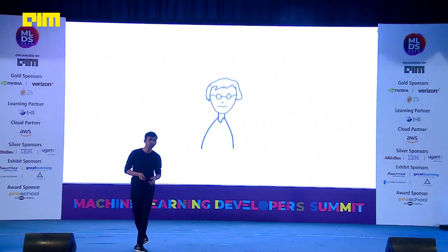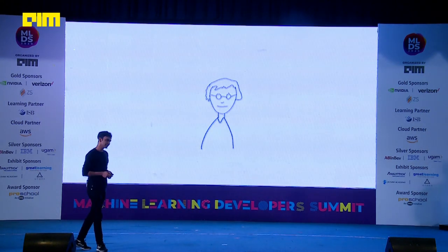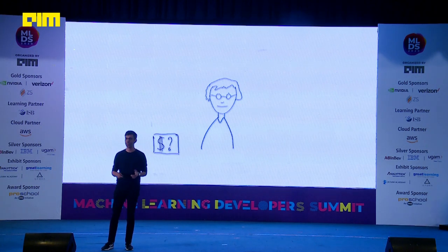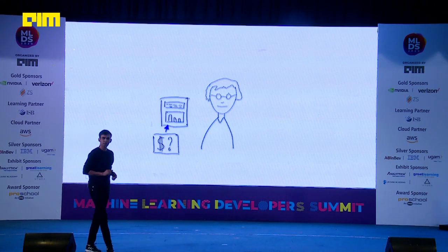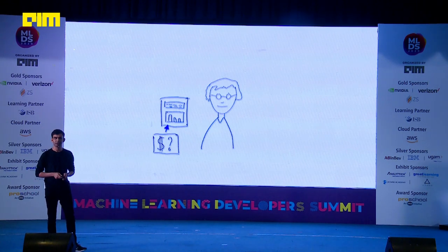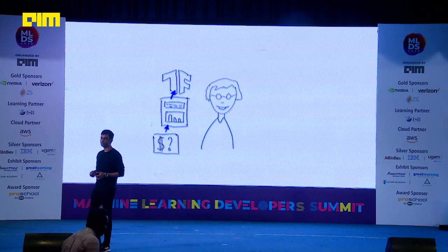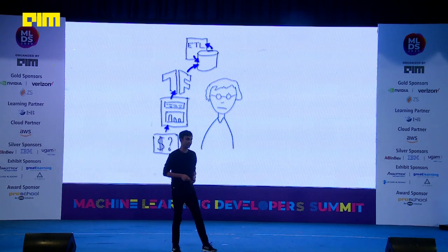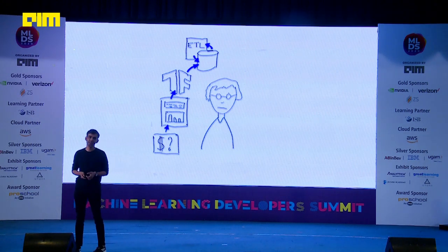Let me expand on that. A data scientist starts working on a business problem — someone comes with an important business metric to optimize. They spin up a notebook, get access to data, slice and dice it, figure out various ways to optimize that metric, use off-the-shelf packages like TensorFlow, maybe write their own training code. All this code needs to run on some dataset, so they write copious amounts of ETLs — maybe in Python — to get access to that data and feed it into their model.